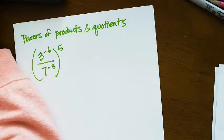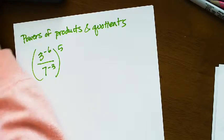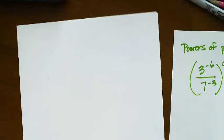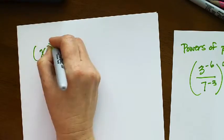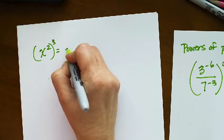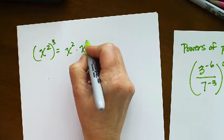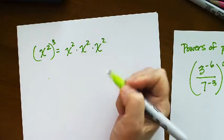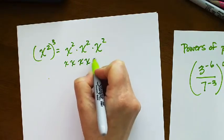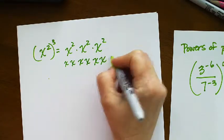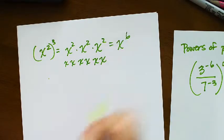So for an easier example, let me do a simple one just before we do this one. If you had something like x to the 2nd raised to the 3rd power, that's x to the 2nd times x to the 2nd times x to the 2nd, which would be x times itself 6 times, which would be x to the 6th.